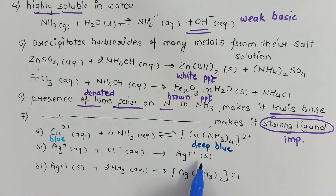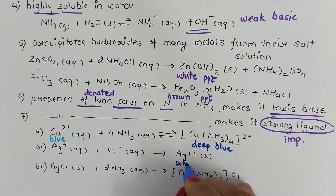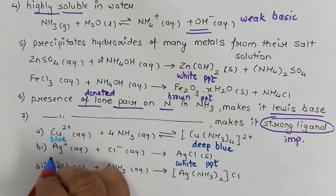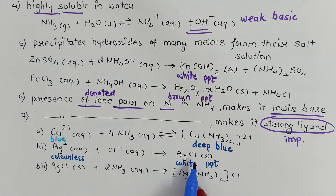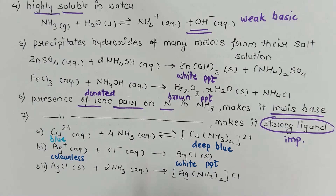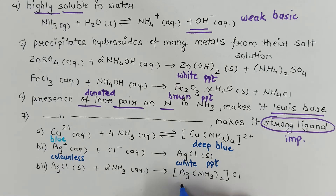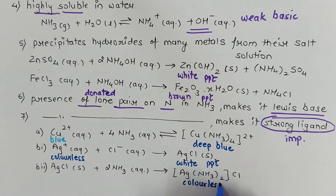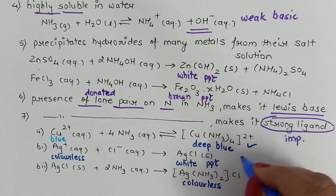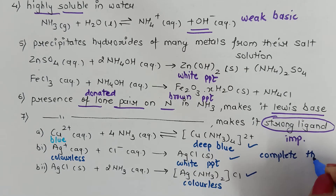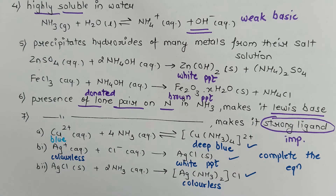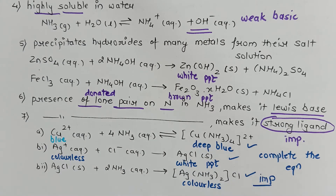Silver chloride is a white precipitate; silver ions are colorless. But when this white precipitate of silver chloride is treated with ammonia, it forms a colorless complex of silver and ammonia. All three of these reactions — with copper, and with silver chloride — are frequently asked as 'complete the equation' type questions in board exams.